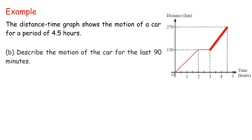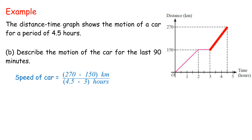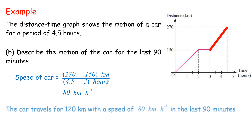B. Describe the motion of the car for the last 90 minutes. Speed of car equals 270 minus 150 km divided by 4.5 minus 3 hours, equals 80 km per hour. The car travels 120 km with a speed of 80 km per hour in the last 90 minutes.